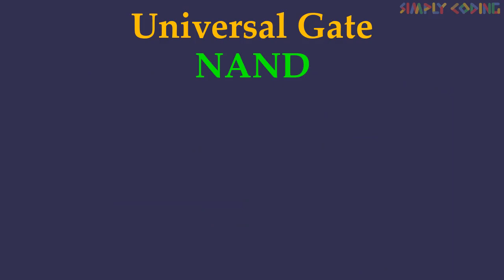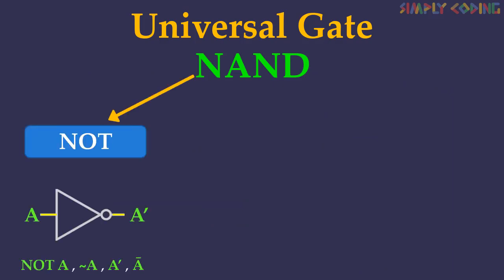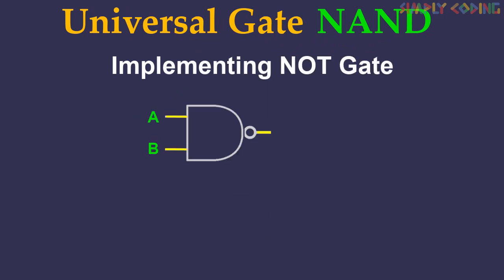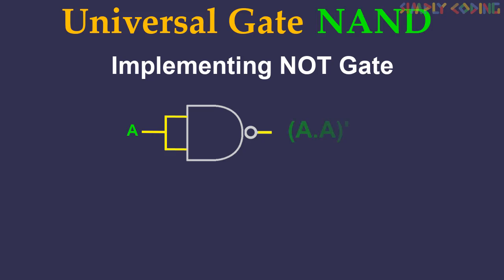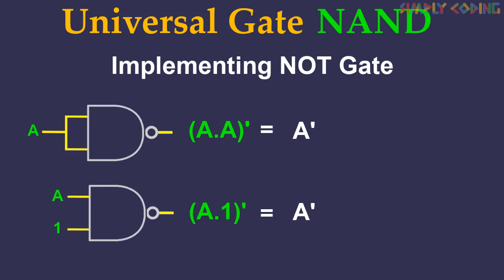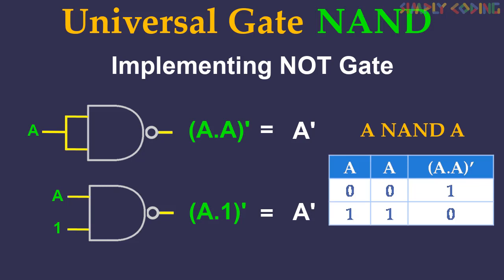First we will see how NAND gate is used to implement basic gates NOT, AND, and OR. Let's start with how we can make a NOT gate using a NAND gate. A NAND gate is equivalent to an AND gate followed by a NOT gate. Joining the inputs of a NAND gate leaves only the NOT gate. The expression of NOT gate in NAND form is (a · a) bar, which is the same as a bar. Another way is to consider the second input as always 1, so the expression is (a · 1) bar, which by identity law equals a bar. You can write this as a NAND a, and its truth table is the same as NOT gate.